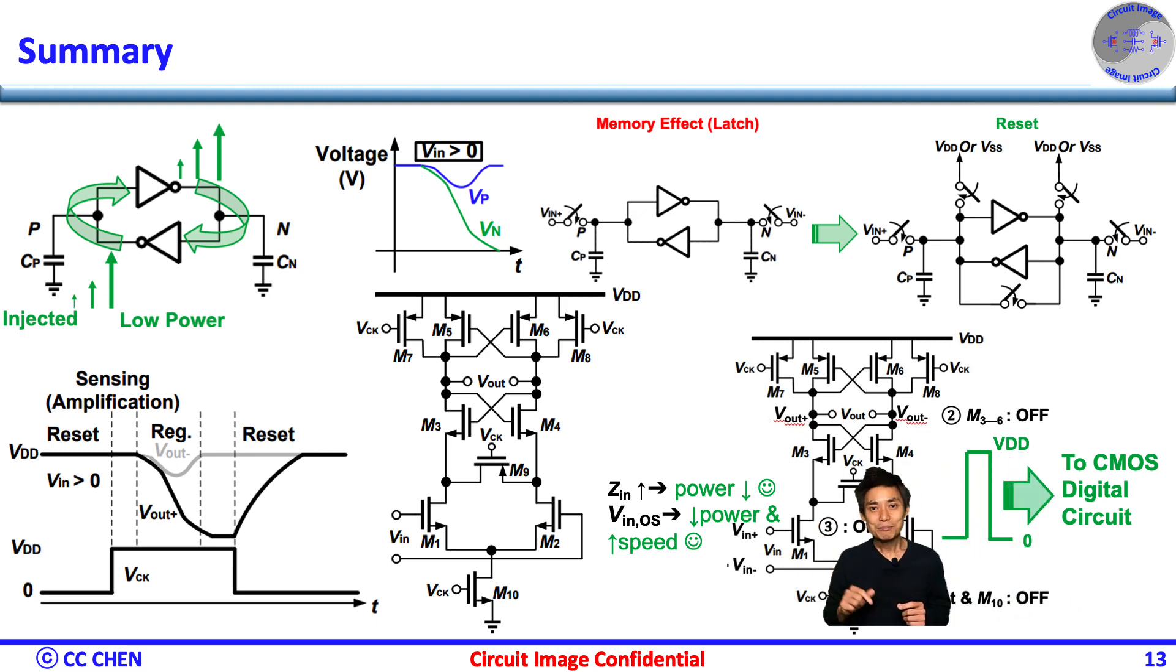Third, the high input impedance reduces the preamp's loading and power. Fourth, the input offset is dominated by the input differential pair, and the DC offset calibration or cancellation at the input stages may not degrade operation speed too much while keeping a low power.